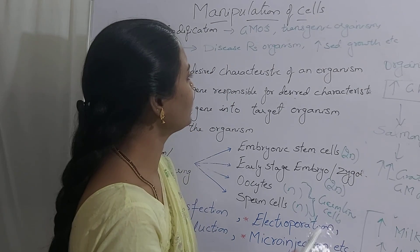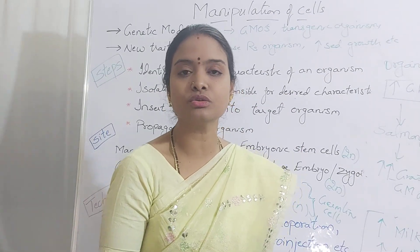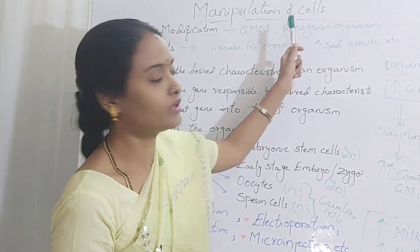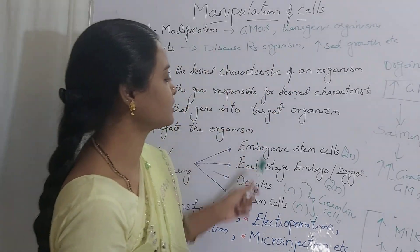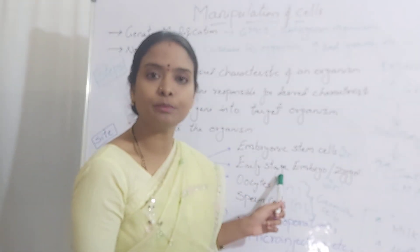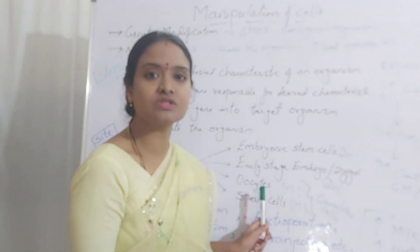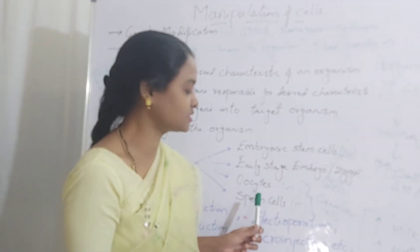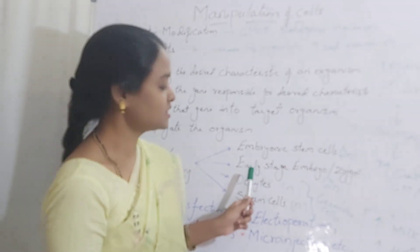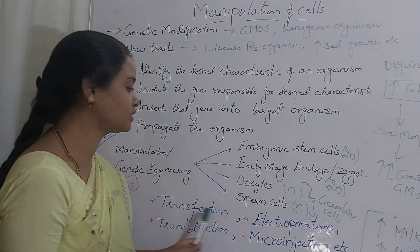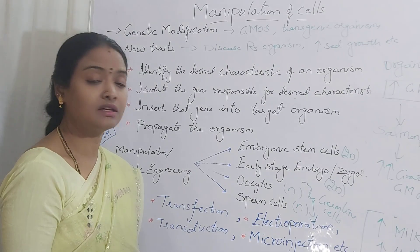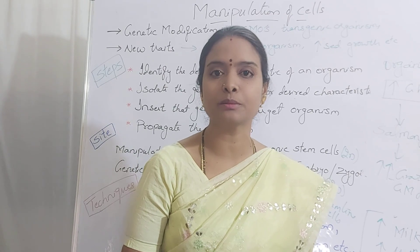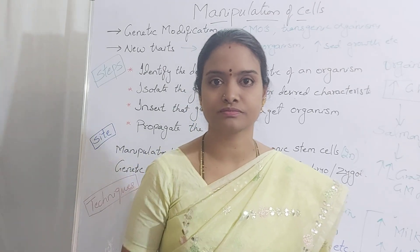In the same way, any character you want to introduce into your target organism can be achieved through genetic manipulation — whether by manipulating the zygote, the developing embryo, the gametes, or by introducing the gene into germline cells, egg cells, or sperm cells. All four techniques will be discussed in detail in the next lecture. If you have any doubts, put them in the comments and subscribe for further lectures.